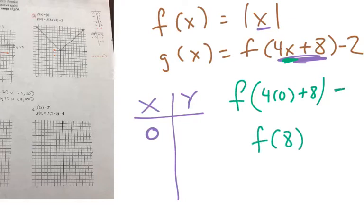So what is f of 8? Well, f of 8 is this up here. So it's the absolute value of 8, which is 8 minus 2, which is 6. So there's a point. Let's do another one.